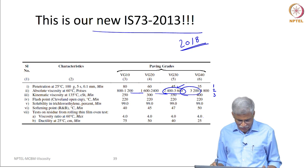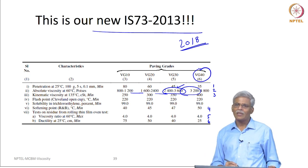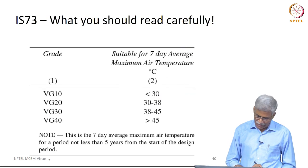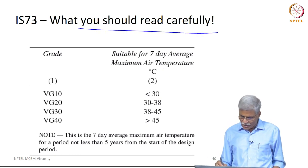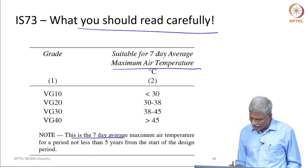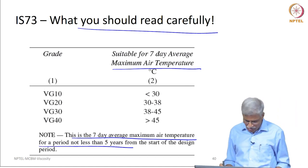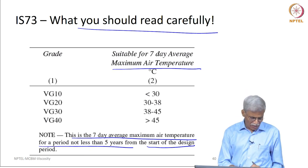So if you are looking at viscosity alone, you might think there is an overlap, but actually there is no overlap because you have to meet all specification parameters together. To classify a binder as VG 40, all these parameters have to be met. This specification gives guidance in terms of the maximum air temperature — specifically, the 7-day average maximum air temperature for a period not less than 5 years from the start of the design period. You should have at least that much design data to make a statement.